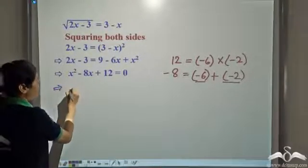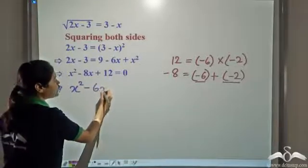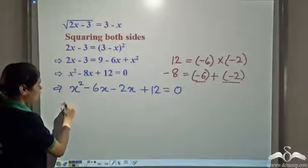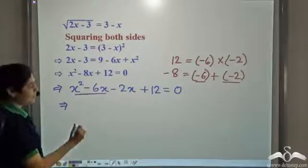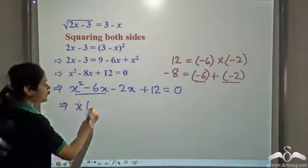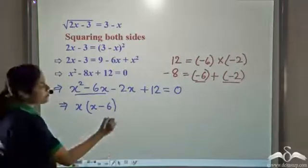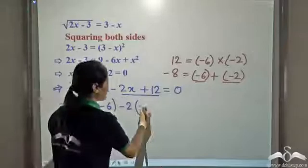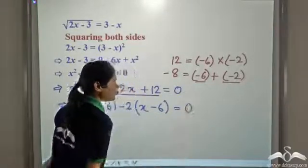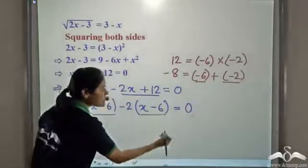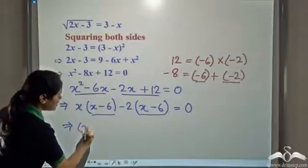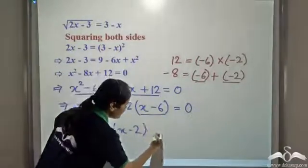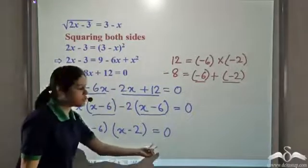So these are the two numbers required for splitting the middle term. We write it as x squared minus 6x minus 2x plus 12 equals 0. From the first two terms, we have x in common, so we take x common and we are left with x minus 6. From the last two terms, we take negative 2 common, giving us negative 2 times x minus 6.